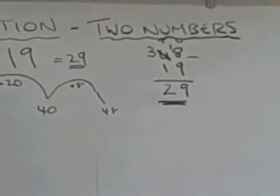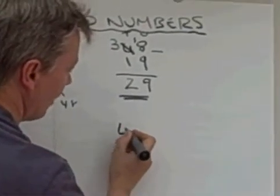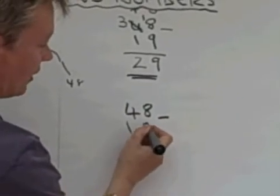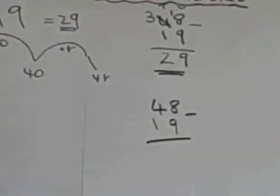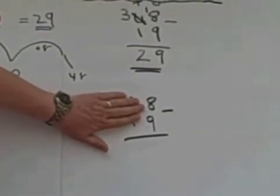Then the final formal method of doing it is slightly different. I'm going to rewrite it again as 48 take away 19. I'm going to start in much the same way with looking at the units. So there again, I have 8 take away 9, I can't do.